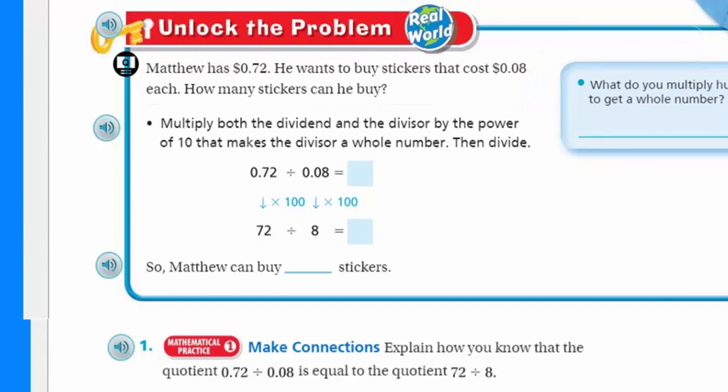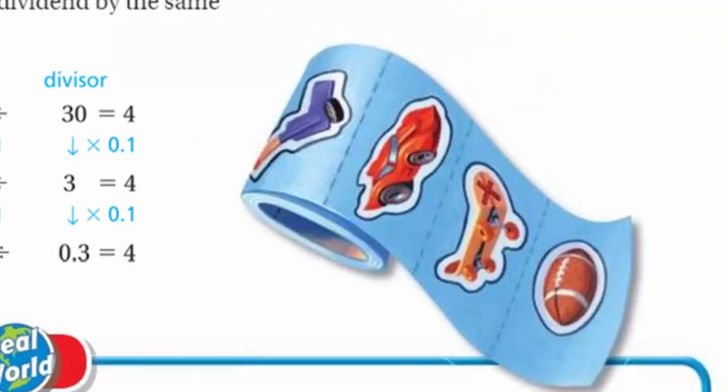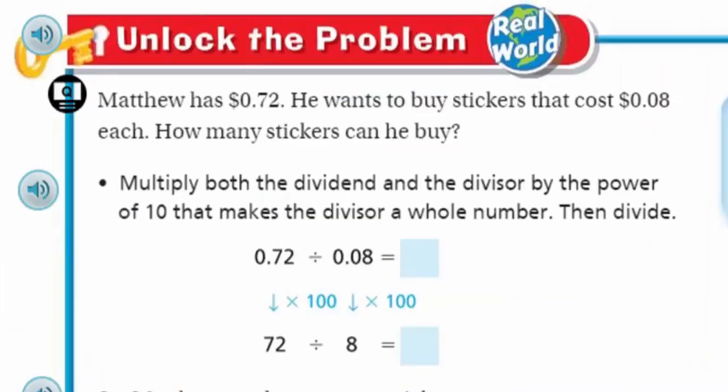And do we have a picture of the stickers? We do. Look at those cute little stickers. Oh man, we got a football, skateboard, looks like a race car of some kind. Ooh, a hockey stick. Ooh, I like hockey. Okay, Mr. Warwick, can we get back to the problem?